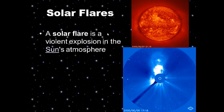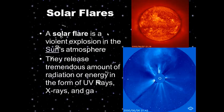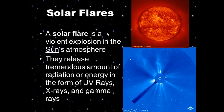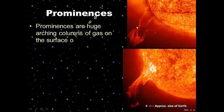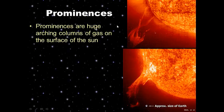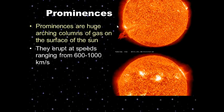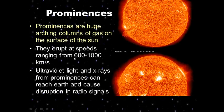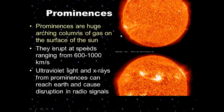Another feature of the Sun is solar flares — violent explosions in the Sun's atmosphere that release tremendous amounts of radiation in the form of UV rays, X-rays, and gamma rays. These are the dangerous types of radiation. Then there are prominences — huge, arching columns of gas on the surface of the Sun that erupt at speeds ranging from 600 to 1,000 kilometers per second. Prominences give off ultraviolet light and X-rays that can reach Earth and cause disruption in radio signals.